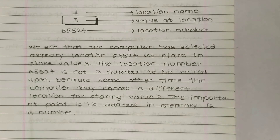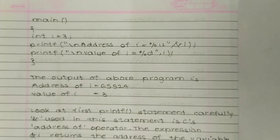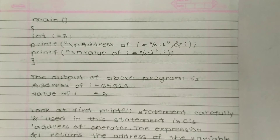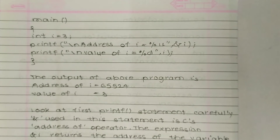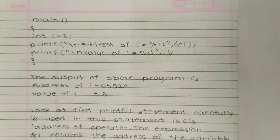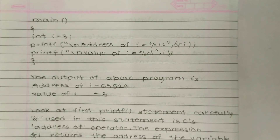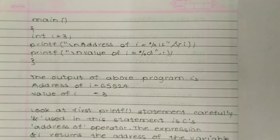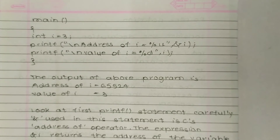Here is a program for understanding pointers. In main(), we declare int i = 3. Then we use: printf("\nAddress of i = %u", &i); to print the address of i using the ampersand operator. And printf("\nValue of i = %d", i); to print the value of i.